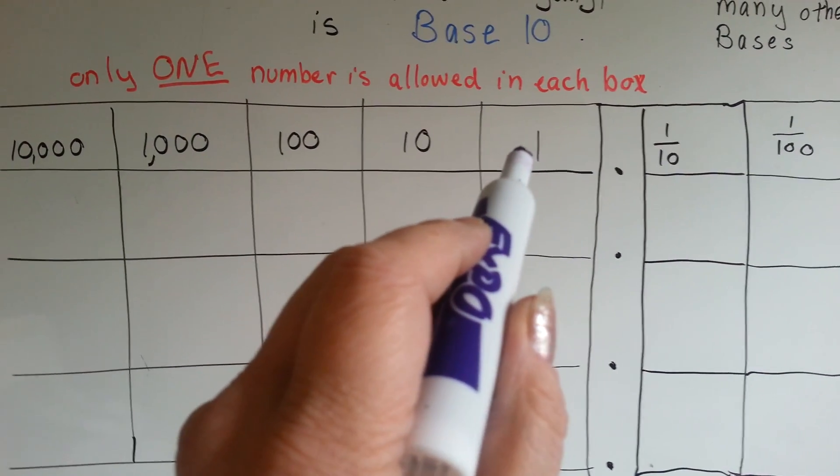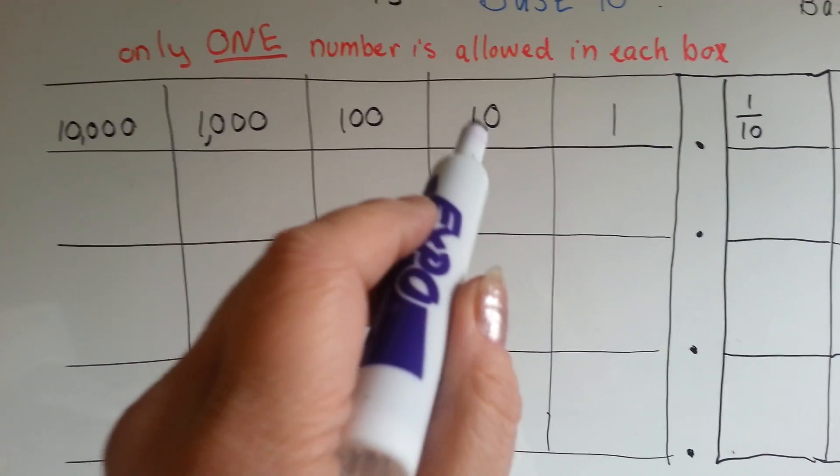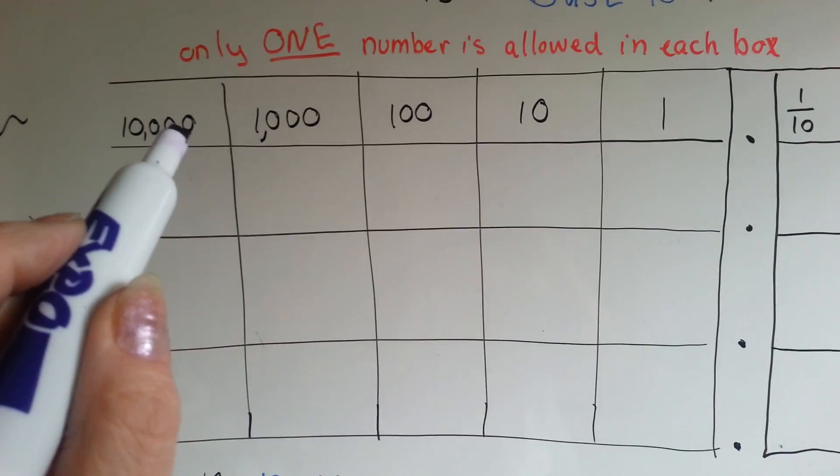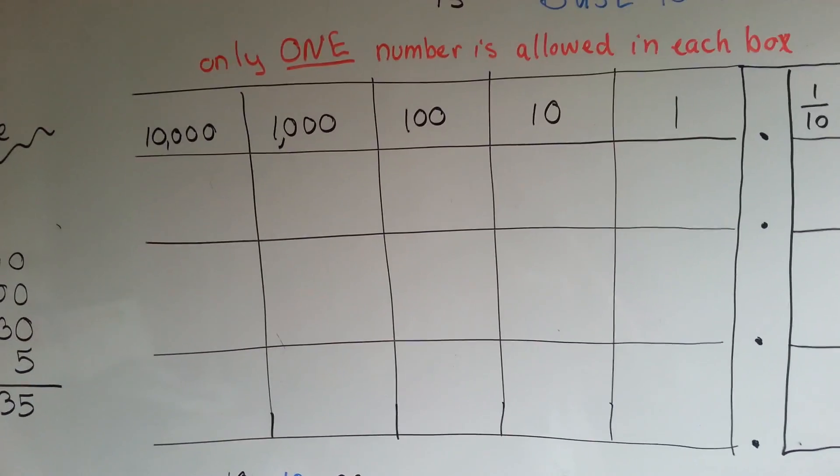But on this side of the place value, of the decimal point, we go from the ones, to the tens, to the hundreds, to the thousands, ten thousands. And it keeps on going, right? To millions and trillions. It just keeps on going.